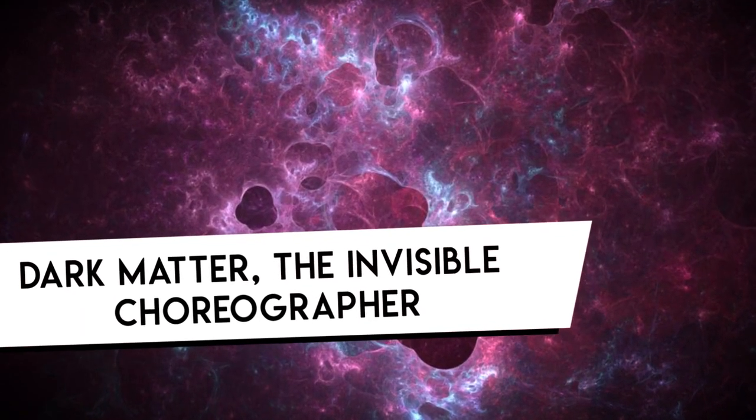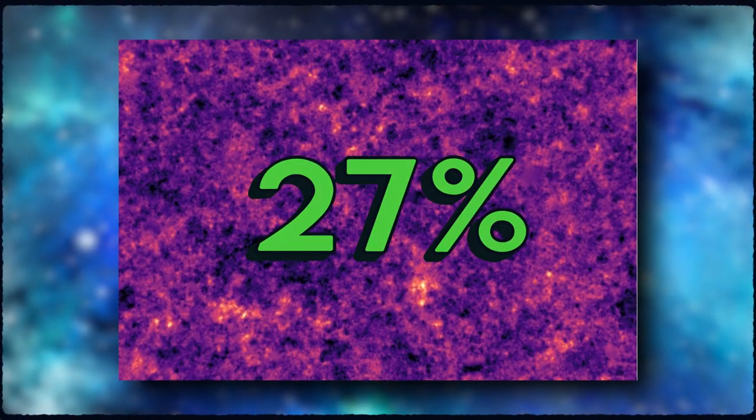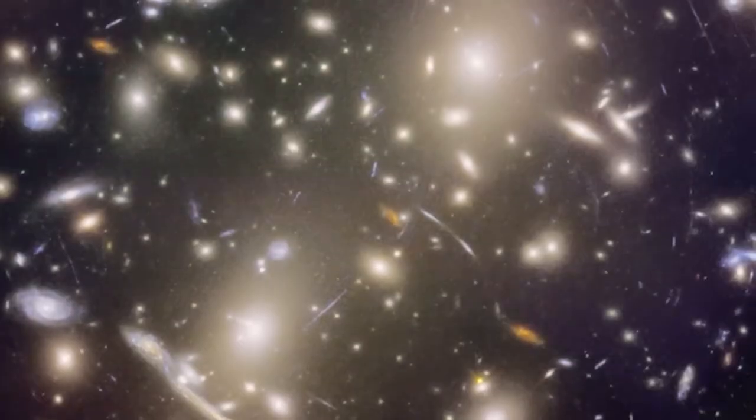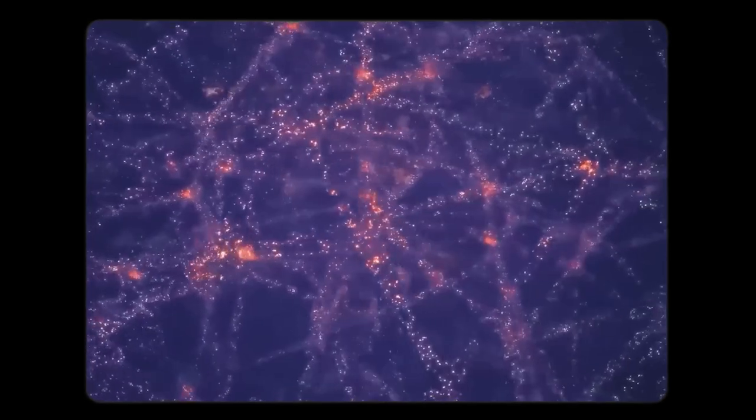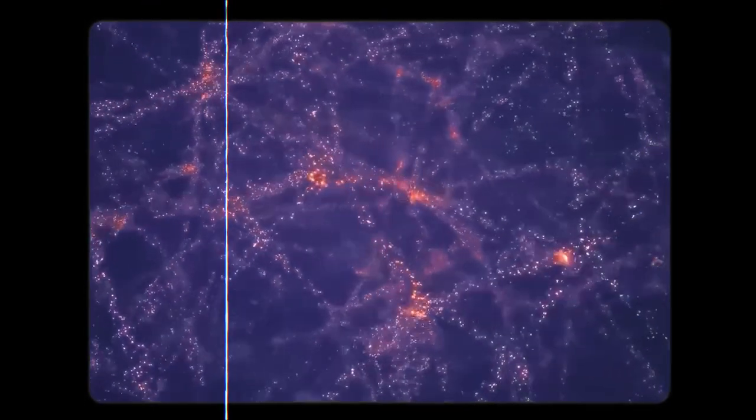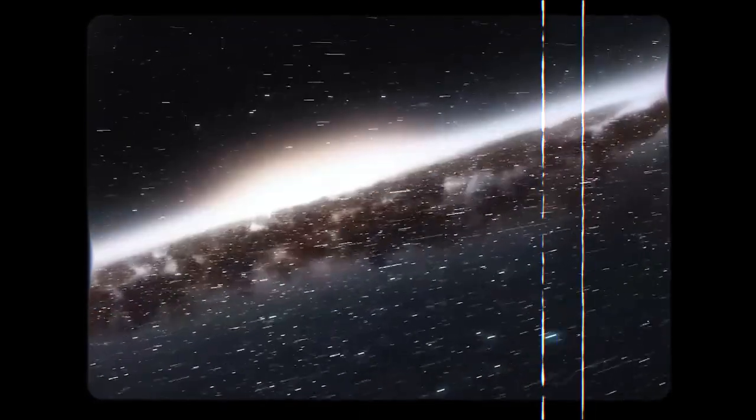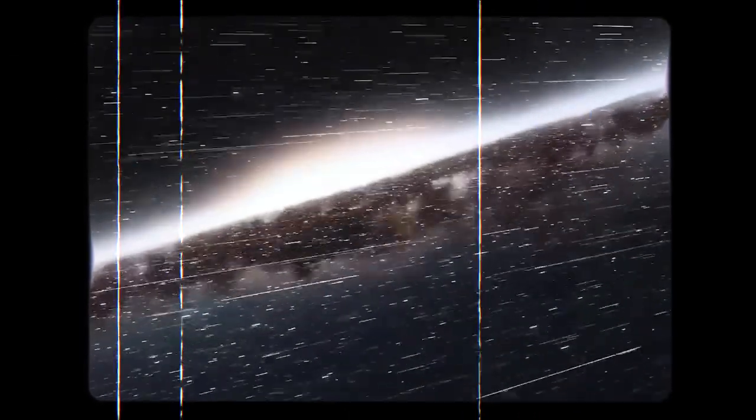Dark matter, the invisible choreographer, holds about 27% of the universe in its grasp. Though we can't see or touch it, its unseen hands guide the graceful dance of the galaxies, weaving a cosmic web that shapes the universe's grand structure.